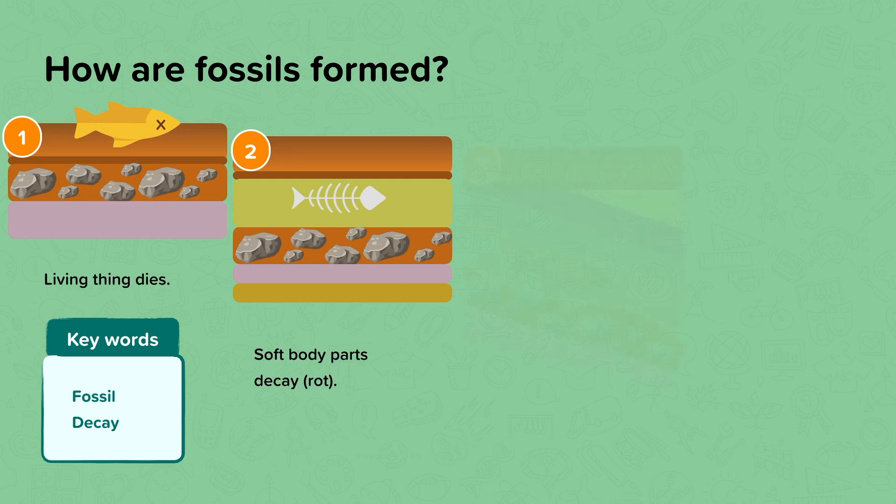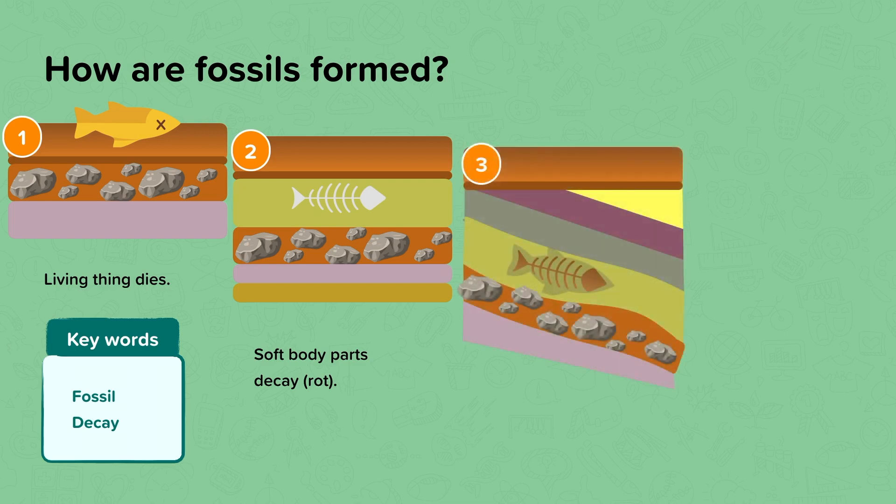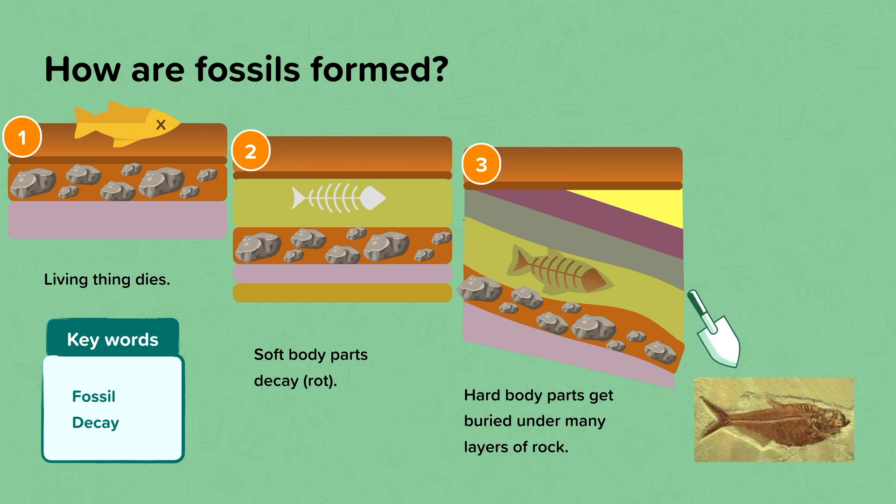As it is further covered, it gets buried deep below ground level. And over millions of years, the hard parts of the body that remain are protected, and you get the imprint of the shape of the fish. This is the fossil. The fossil can be dug up millions of years later and discovered by humans. It can be added to all the other fossils that have been found as part of a fossil record.